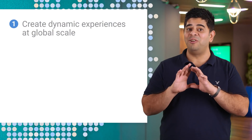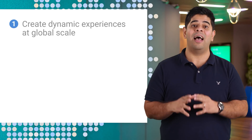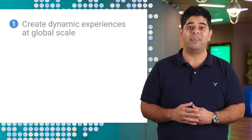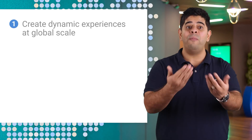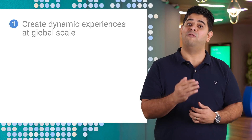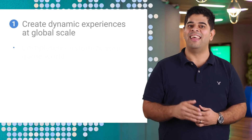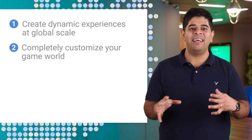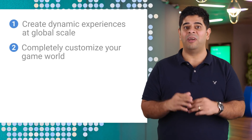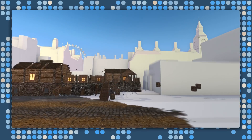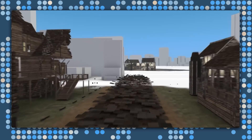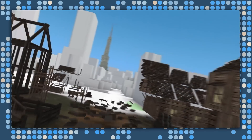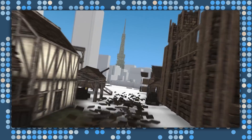But you don't have to be a mapping specialist to build real world games. The SDK interprets the geodata for you. Additionally, you can completely customize your game world — you can change colors, apply alternate textures, and even swap out prefabs altogether.